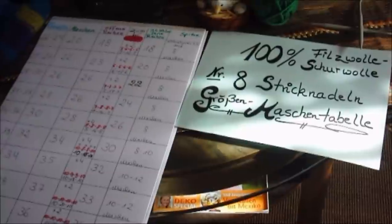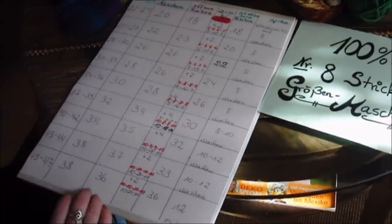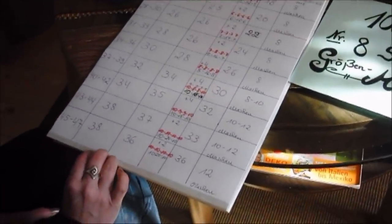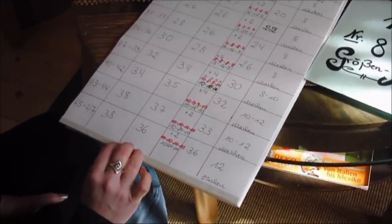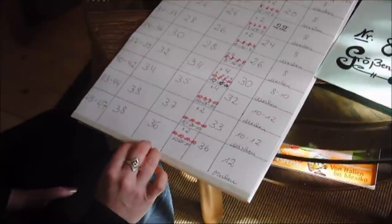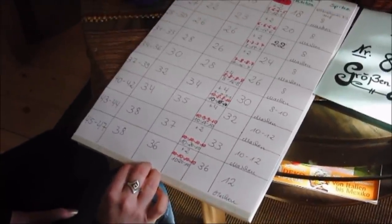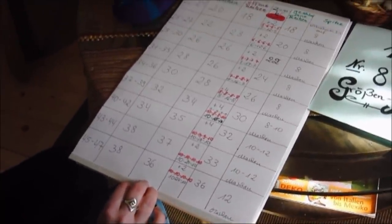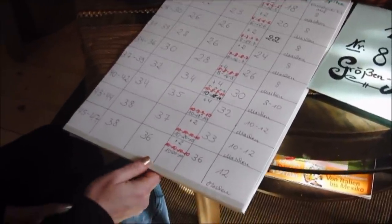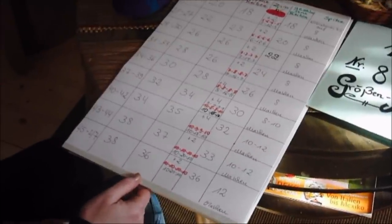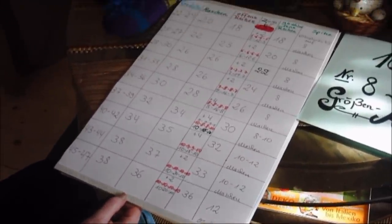Wenn er dann immer noch zu groß ist, stecke ich ihn einfach bei der nächsten Wäsche bei 40 Grad nochmal mit rein, richtig schön in die Trommel wenn die ganze Wäsche drin ist. Und dann schauen: passt er oder ist er immer noch zu groß? Dann tue ich ihn auch ein zweites oder drittes Mal rein, bis genau die Größe entstanden ist die ich haben möchte.